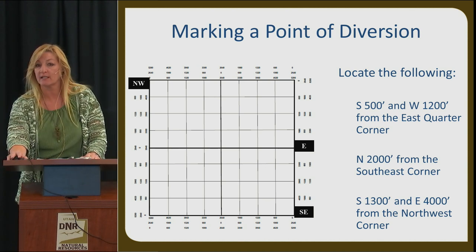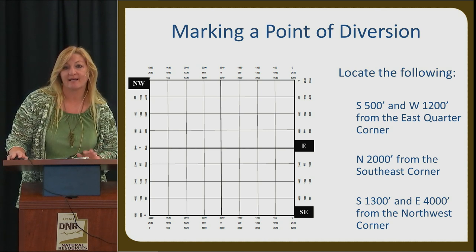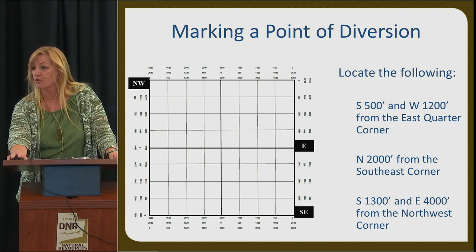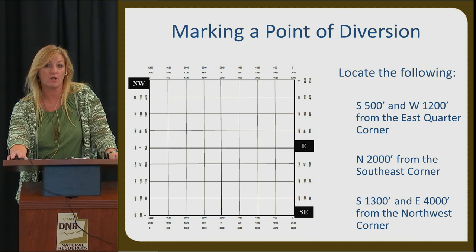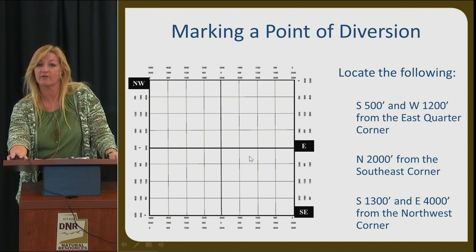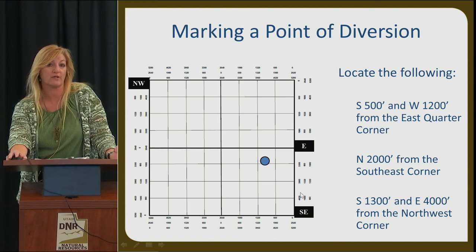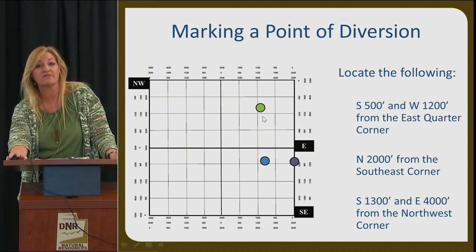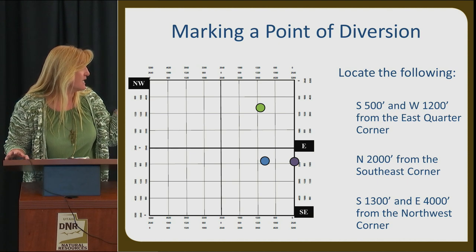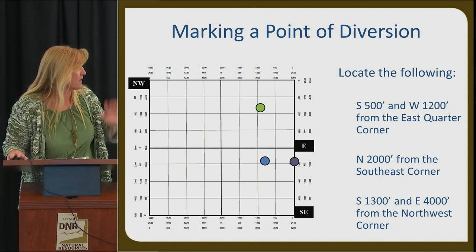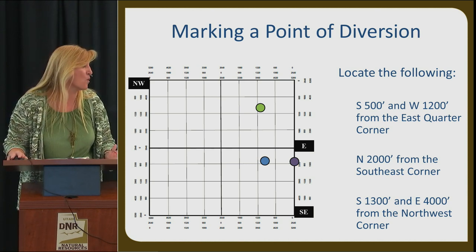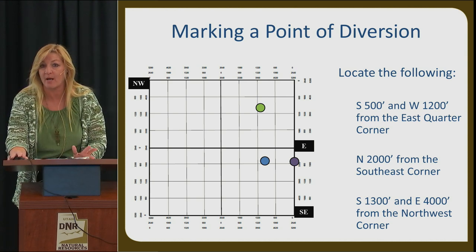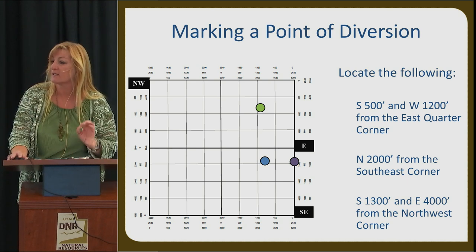Marking a point of diversion is based on the public land survey. You read the description backwards — your starting point is the quarter section corner. For example: starting at the east quarter section, go south 500 feet and west 1,200 feet to find your point of diversion. Or starting at the southeast corner, go north 2,000 feet. Or starting from the northwest corner, go south 1,300 feet and east 4,000 feet. We'll cover how to get an actual point of diversion more when we go over application maps, but this is how you can find a point of diversion using just the grid.